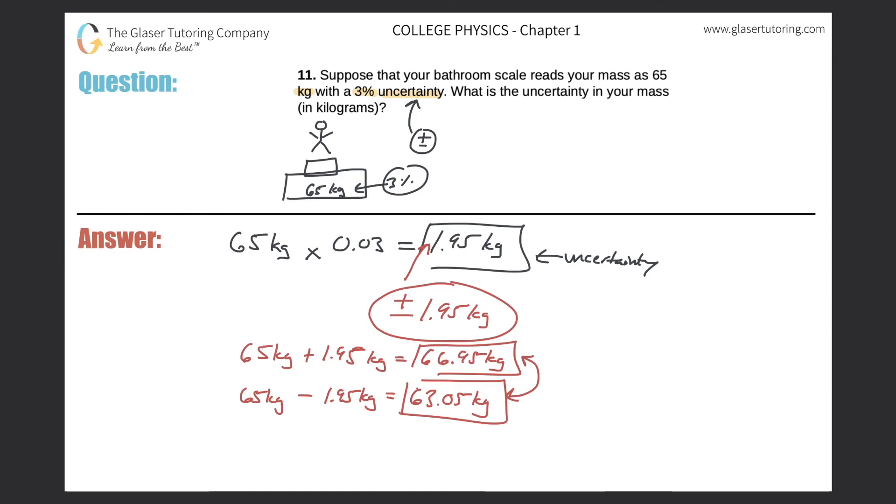And again, you can write it that way. Another way to write it in a condensed fashion would be to write something in this fashion. 65 kilograms plus or minus 1.95 kilograms. That would be a condensed way to write it instead of writing the upper and lower bounds. But all these should be acceptable.